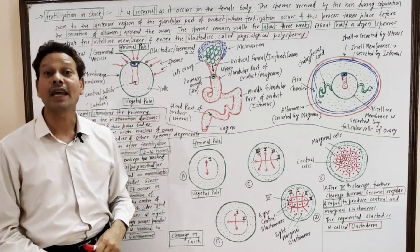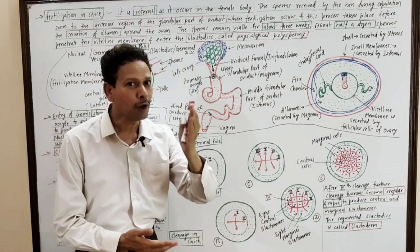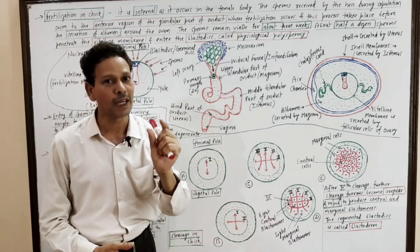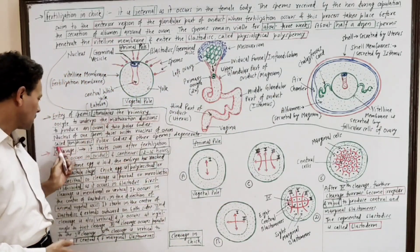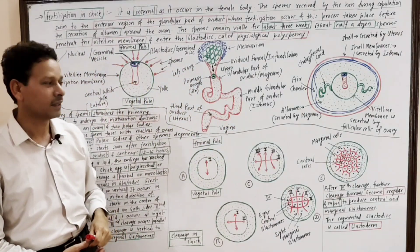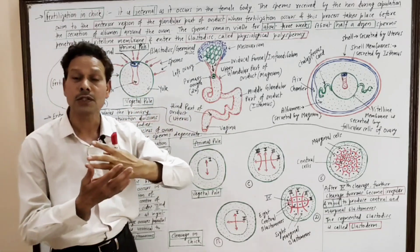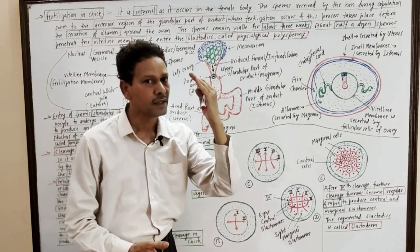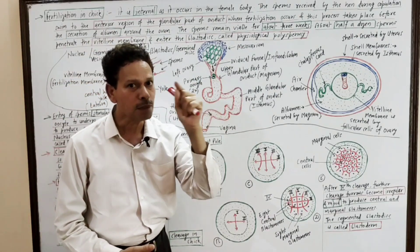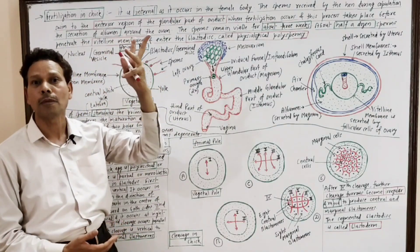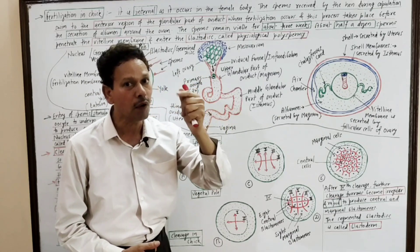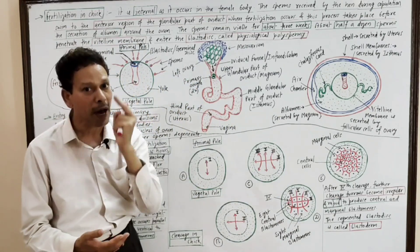The next topic is cleavage. Cleavage means the diploid zygote — that single-celled body — is converted into a multicellular body. This process of cleavage is partial. It is meroblastic, and it is cleidoic. In case of chick, in case of birds, due to the presence of a heavy amount of yolk, the egg is megalecithal, macrolecithal, telolecithal. It means the cleavage process occurs only in the very small active cytoplasm — that is the blastodisc, in the form of a small disc. So this kind of cleavage, only in the blastodisc, is discoidal, partial, or meroblastic.